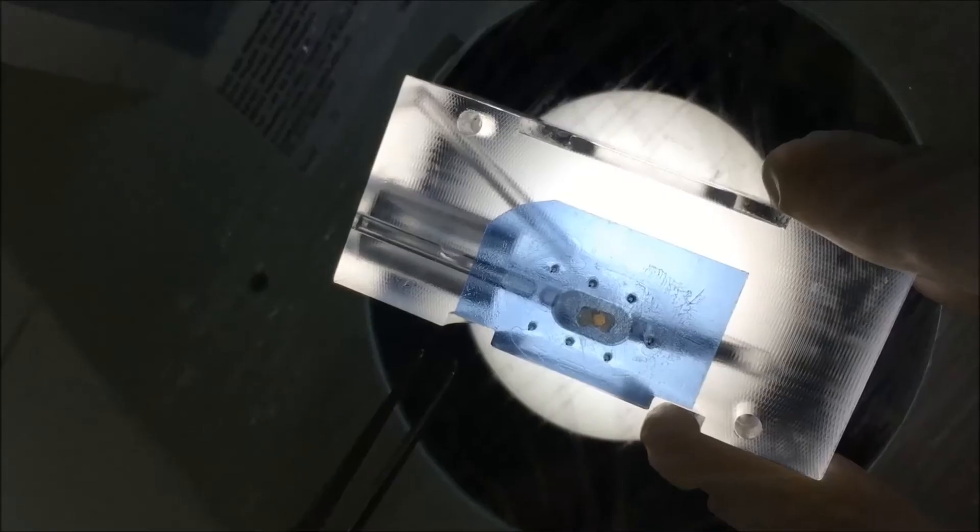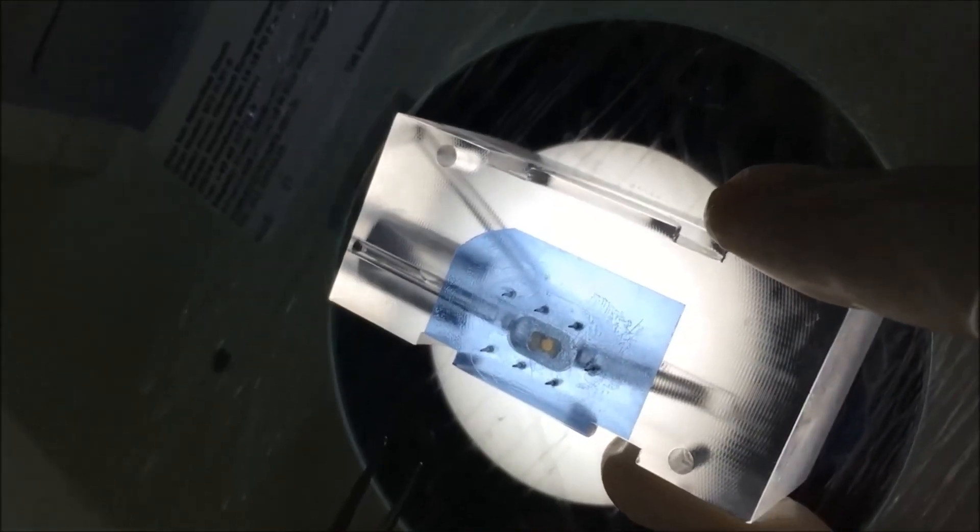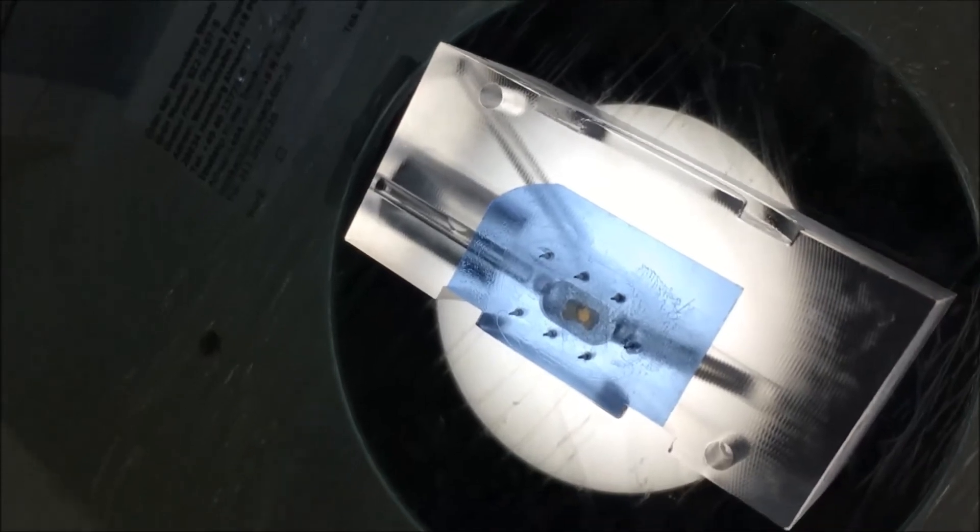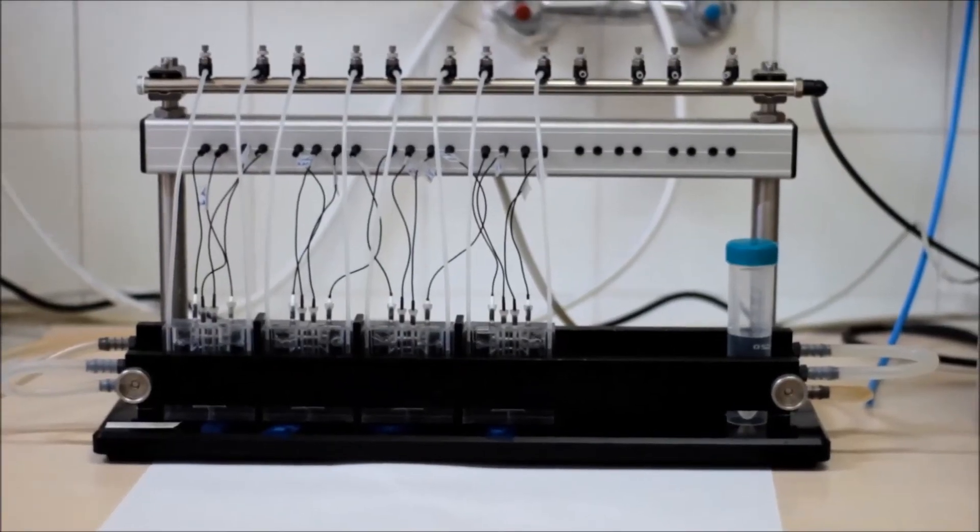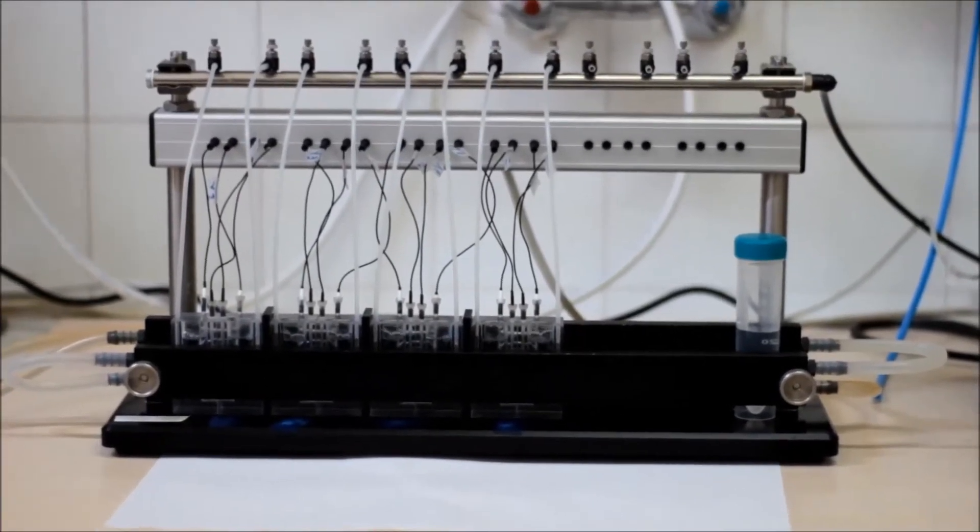The Ussing chamber isolates the apical side from the basolateral side. The apical side of the epithelium should be on the top. Close the chamber with the ring and fill it with Ringer solution again. Repeat the procedure same as before the calibration and apply for the rest of the chambers.